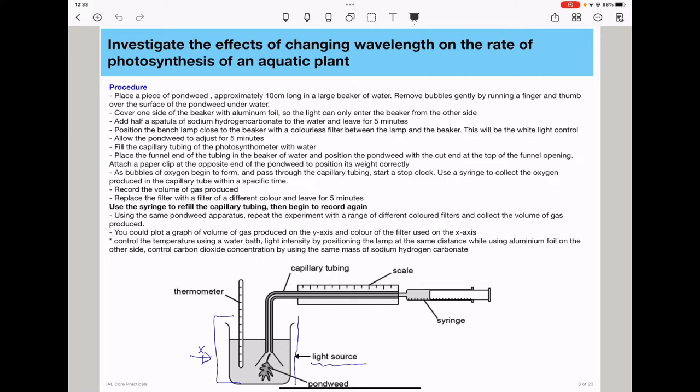Then attach a paper clip at the opposite end of the pondweed to position its weight correctly. As bubbles of oxygen begin to form and pass through the capillary tubing, you need to start the stop clock. This is done to ensure that we can measure the time for which the experiment has been carried out. And then you use a syringe to collect the volume of oxygen produced in the capillary tube within a specific time.